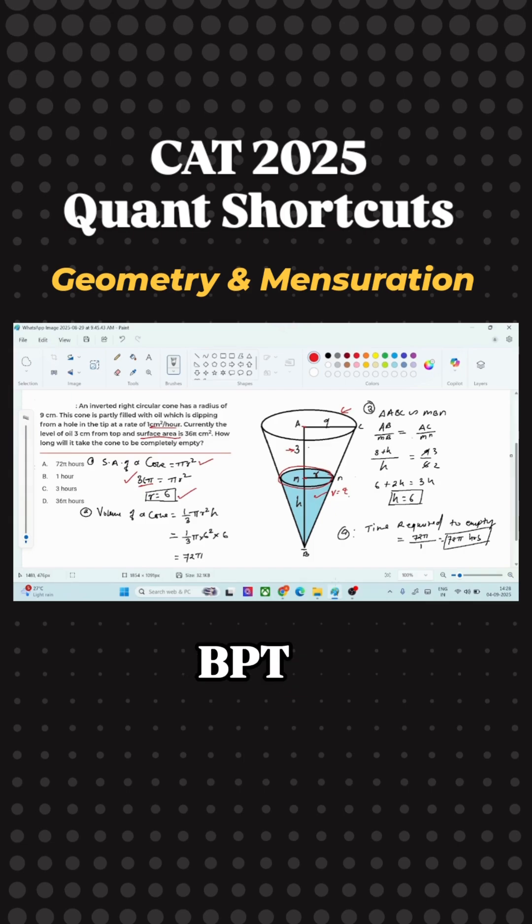So using your BPT theorem, that is basic proportionality theorem, we can equate two triangles. That is, if you can see on the screen, first triangle is triangle ABC and the second triangle is triangle MBN. These are two different triangles.